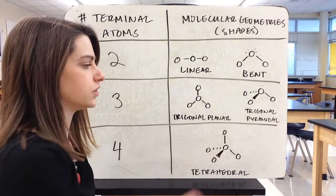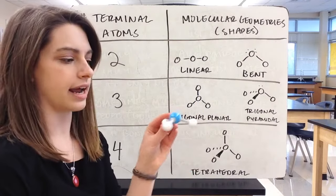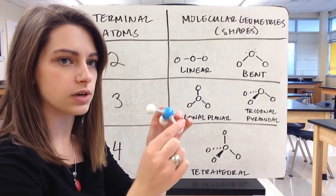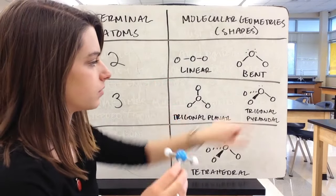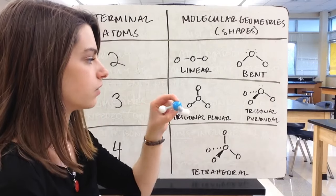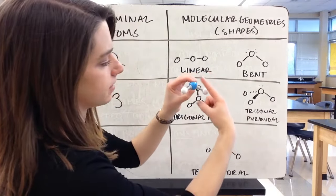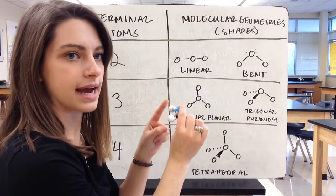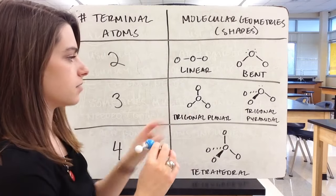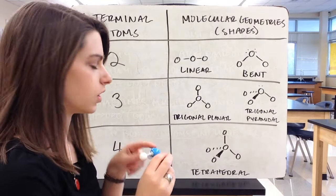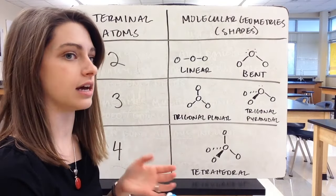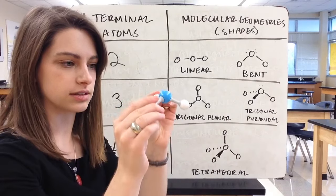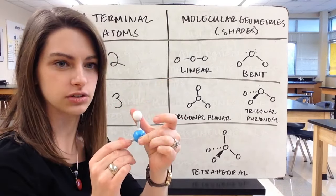With three terminal atoms, we have two different options. Trigonal pyramidal, like NH3, has nitrogen in the middle with three hydrogens in a slightly 3D shape. All the bonds are bent slightly away, with a lone pair of electrons up here pushing away on the other bonds. When we draw this, one bond is in the plane of the paper, one comes out with a wedge, and one goes back with a dotted line. The other option is trigonal planar, like BH3, which is the same shape but flat instead of sitting up on its three legs.